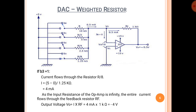Next case: B3 = 1. B3 is the MSB, and when B3 is made 1, the current flows through the R/8 resistor, which is 1.25kΩ. The current is (5 − 0) / 1.25kΩ = 4mA. As the input resistance of the op-amp is infinity, the entire current flows through the feedback resistor RF. The output voltage V0 = 4mA × 1kΩ = −4V when B3 = 1.